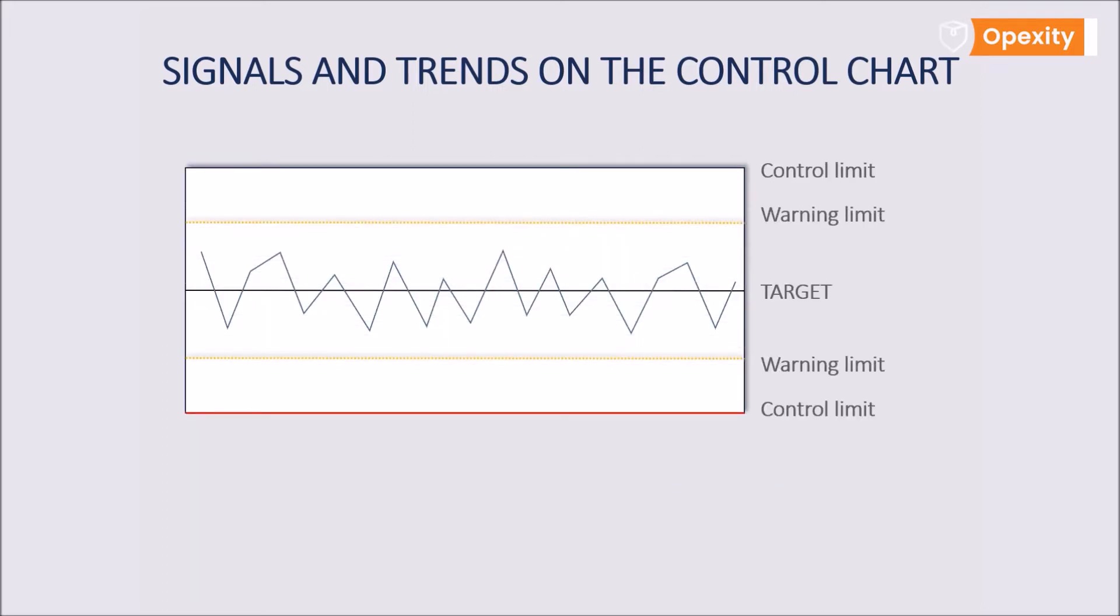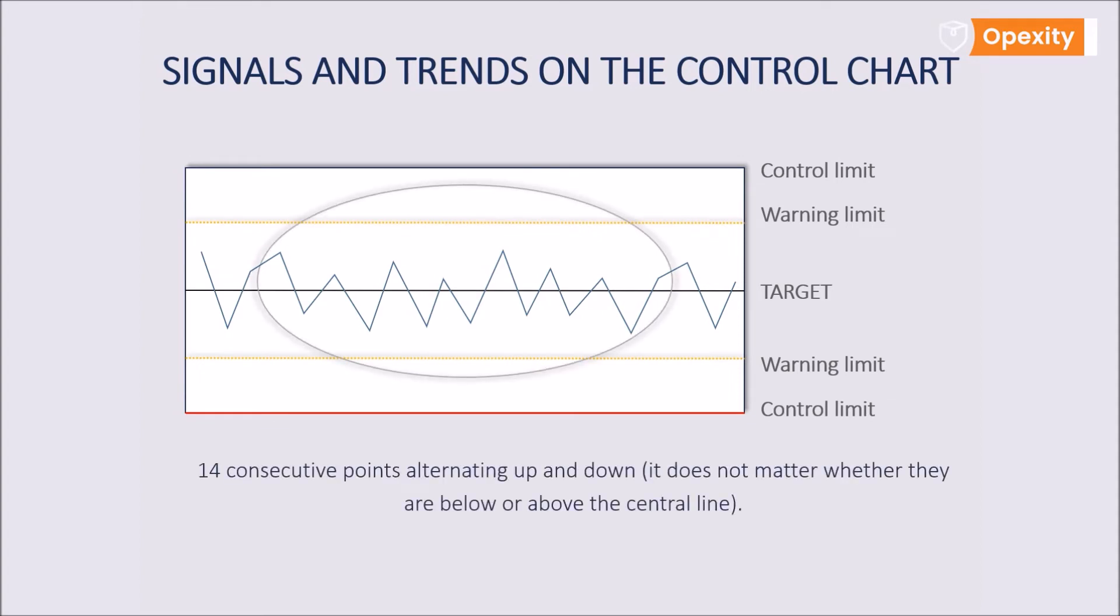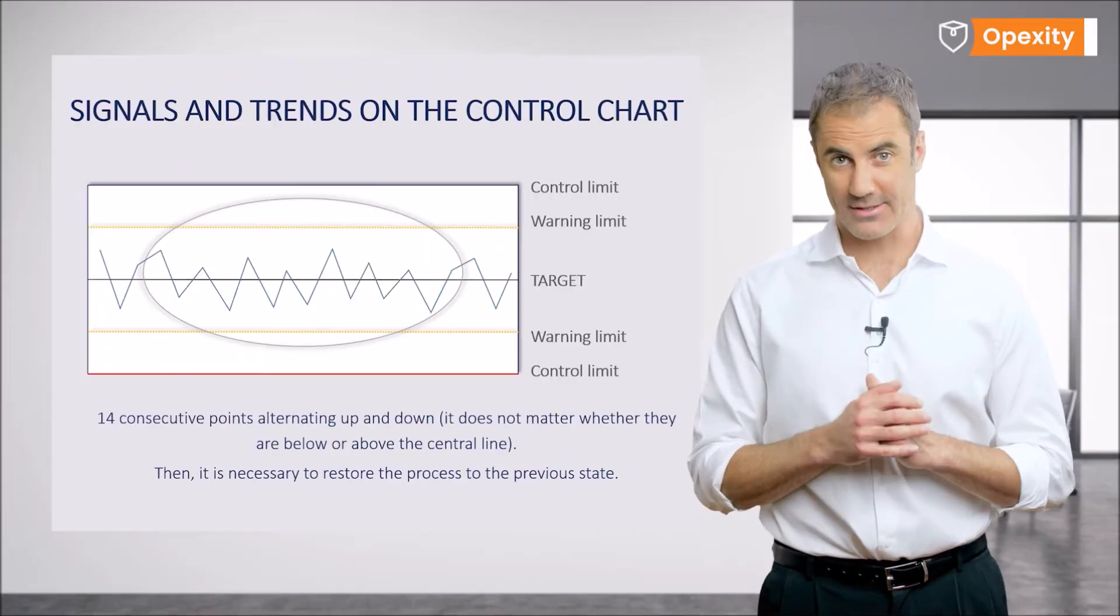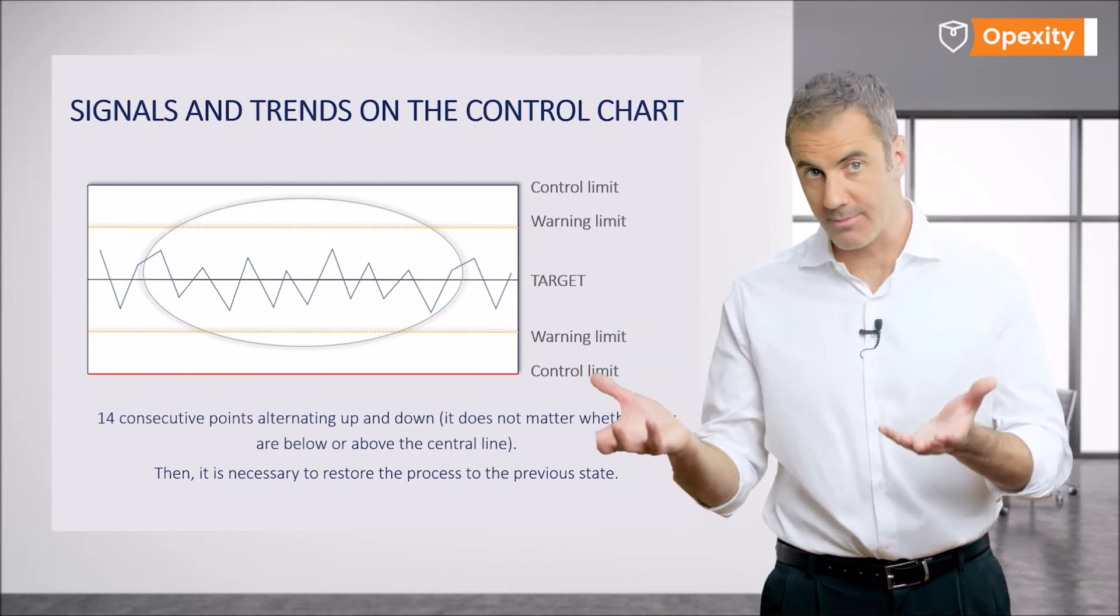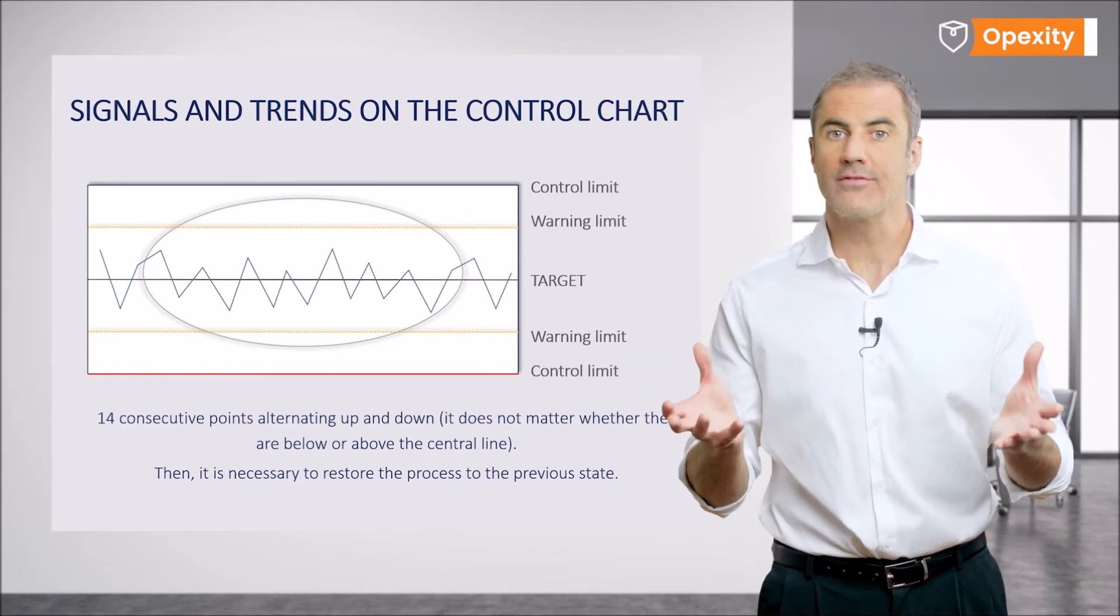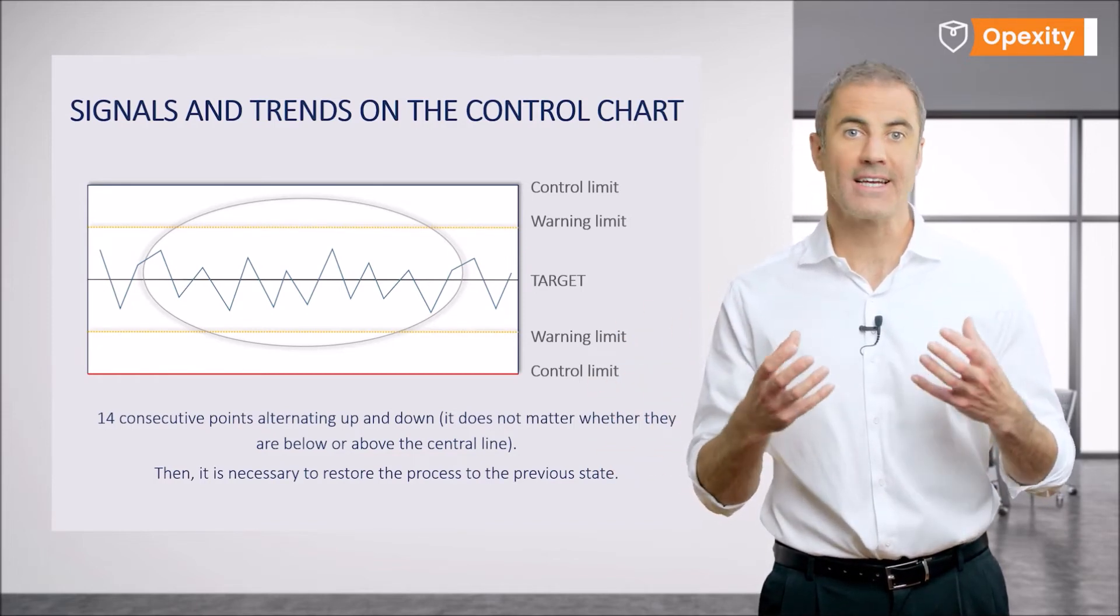The situation is different when we note 14 consecutive points alternating up and down and it does not matter whether they are beyond the limits or near the center line. If such a trend is detected, it can be expected that the process is continuously affected by two opposing causes. For instance, raw materials from two different sources to supply, from two suppliers, or from different production batches being taken into the process.